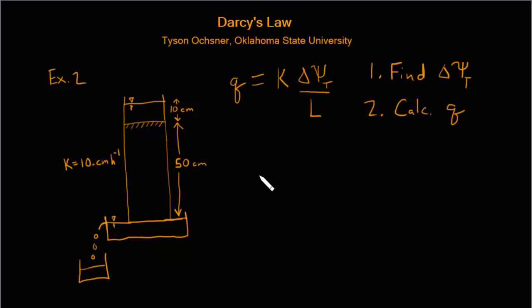In this problem, as in most soil water flow problems, I recommend that you make a table to calculate the difference in soil water potential. We can have a gravitational potential component and a pressure potential component, and we add those together to get the total potential. Here we're neglecting any effect of osmotic potential.